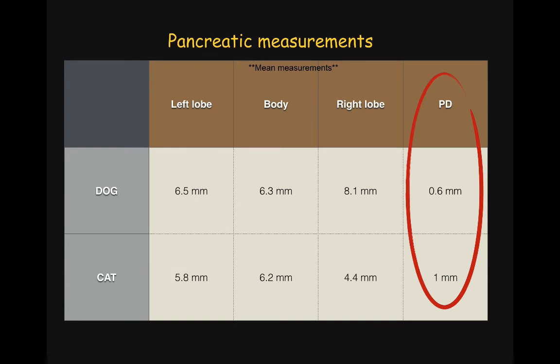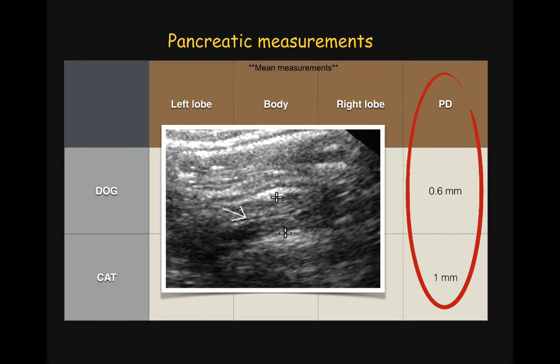The pancreatic duct can be seen in both dogs and cats, but it's often more obvious in older cats, especially as they get older. See the thin anechoic tubular structure that represents the duct in the left pancreatic lobe of this normal cat.